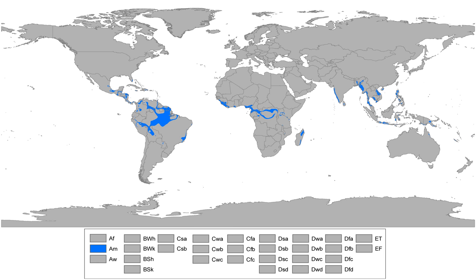Notable cities with a tropical monsoon climate include: Cairns, Queensland, Australia; Yangon, Myanmar; Taedong, Taiwan; Manaus, Amazonas, Brazil; Miami, Florida, United States; San Juan, Puerto Rico; Santo Domingo, Dominican Republic; Chittagong, Bangladesh; Malay, Maldives; Conakry, Guinea; Bigan, Philippines; and H.P.A.N., Myanmar.